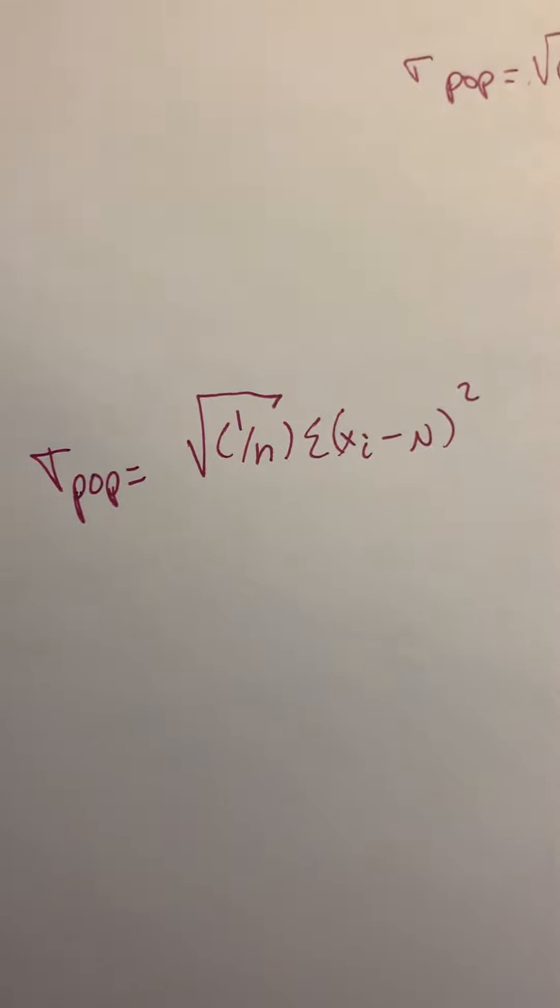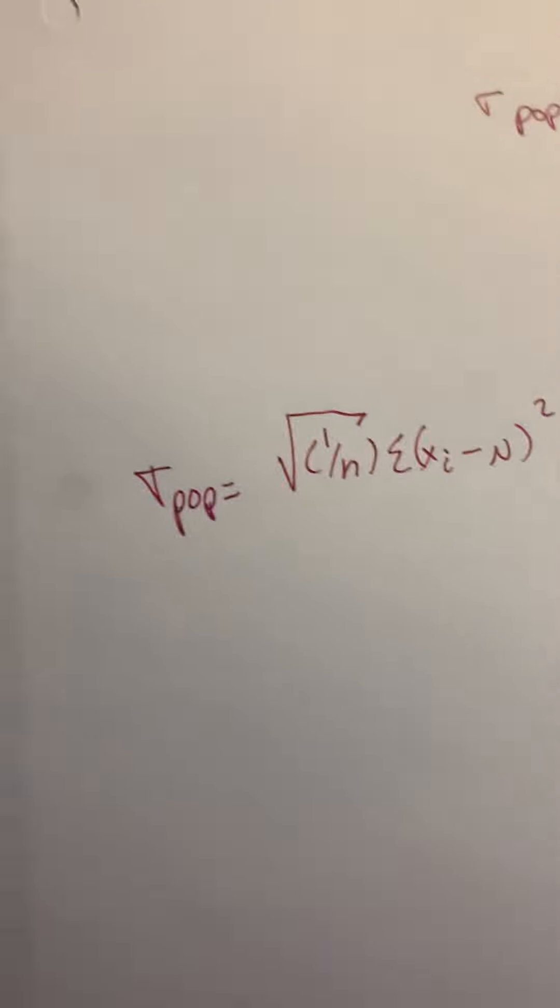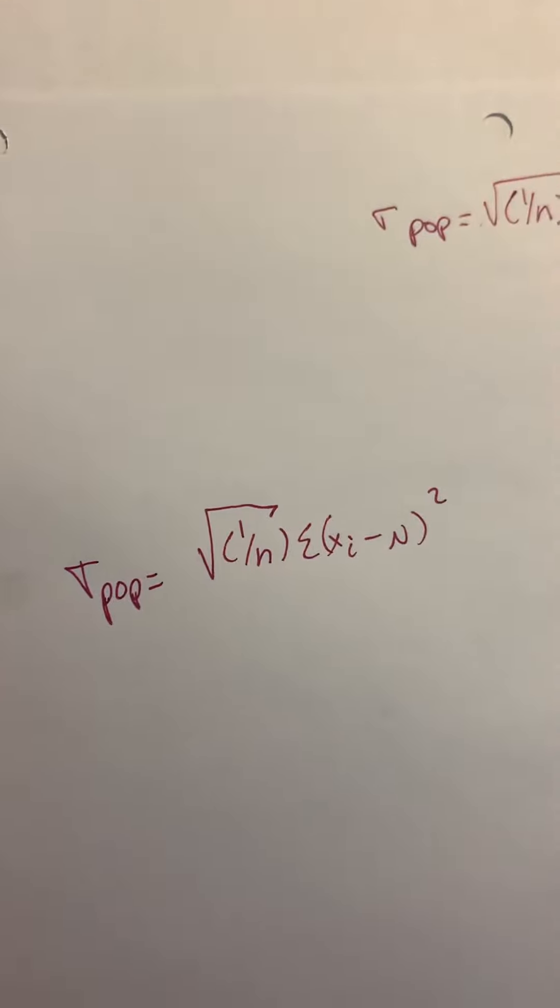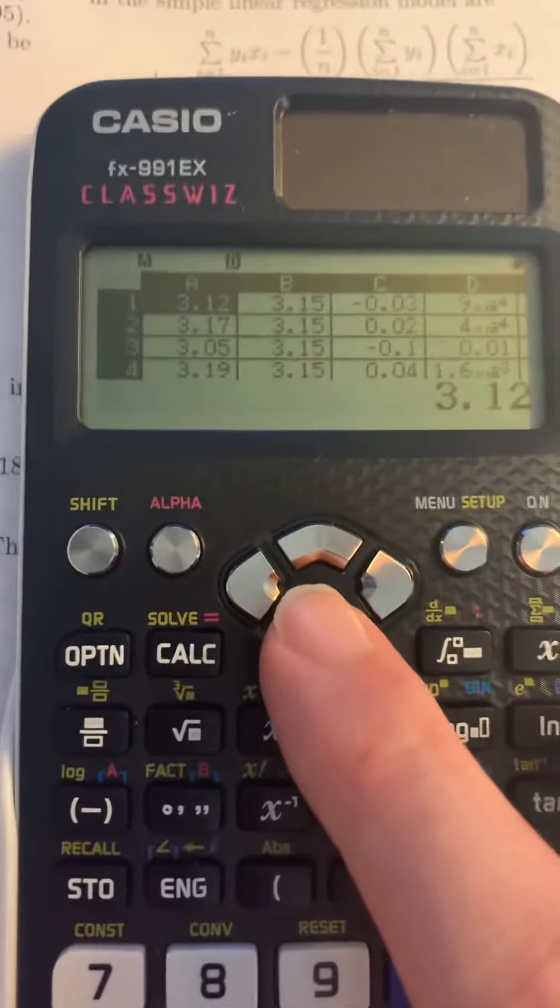And just as a reminder, the standard deviation of the population is this formula. And again, when you see this formula, when I use the Greek mu, it could also be X bar. Either one would be the mean average.